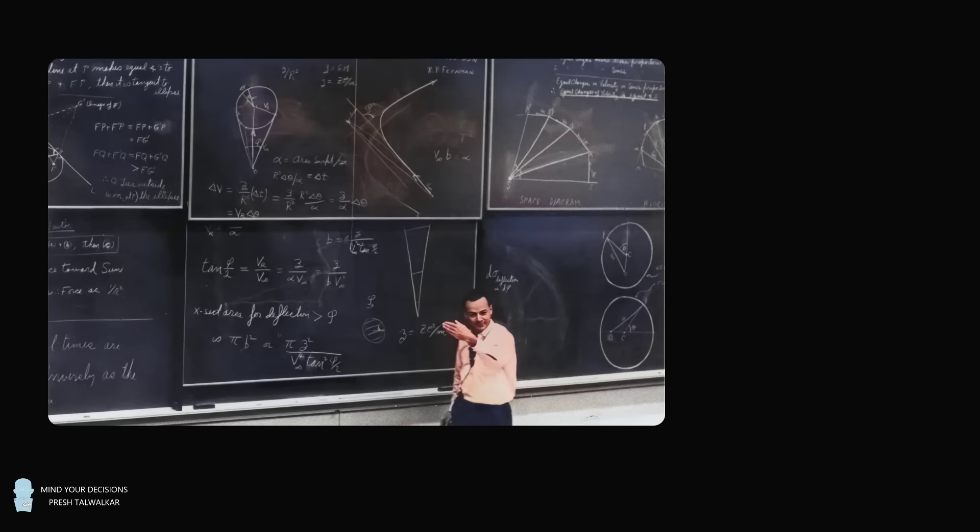Hey, this is Presh Tollwalker. The physicist Richard Feynman is considered one of the brightest minds, and he won the 1965 Nobel Prize in Physics. But no one is perfect, and even a genius can get tricked by a simple problem.